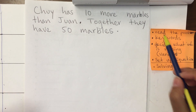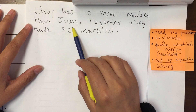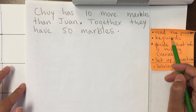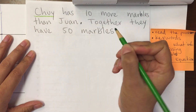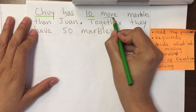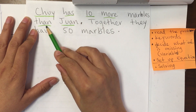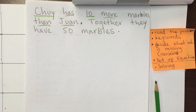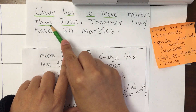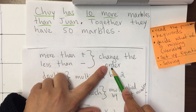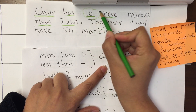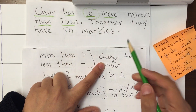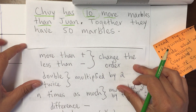Okay, let's go to another one. Read the problem first: Chuy has 10 more marbles than Juan. Together they have 15 marbles. What are the keywords? Well, we know that Chuy has 10 more than Juan. 'More than' — that's one of those special words. 'More than' means plus, but we also change the order. The number before 'more than' comes after the plus, and 'more than what' goes before the plus.